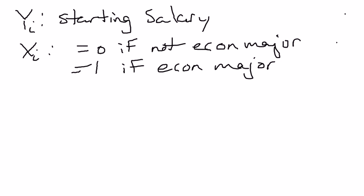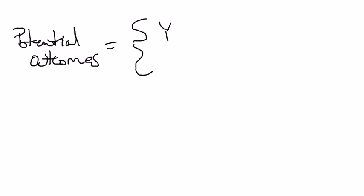So here are two variables. Then there are two potential outcomes for your salary. Now, y is your salary. Let's say you get y1i if xi is 1. So if you decide to major in economics, then x equals 1 and you'll get y1i as your salary. If you choose not to major in economics, then you're going to get y0i as your salary.